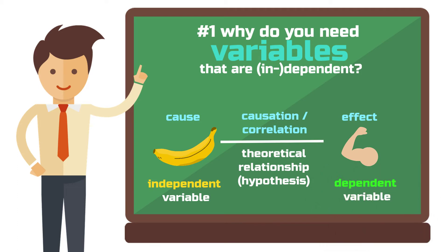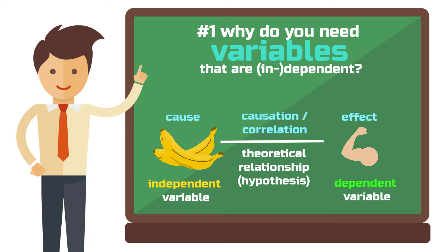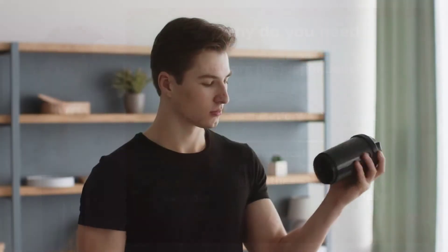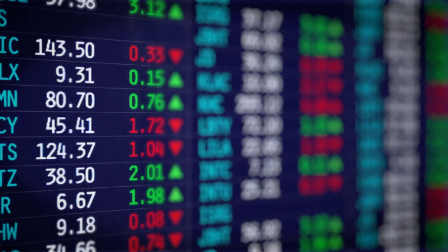Why is the first one called independent? Because this variable can be varied arbitrarily — it could also be drinking a protein shake or eating two bananas. In that sense, this variable does not depend on other variables, hence: independent variable. The second one, which represents the effect, is called dependent because the value of this variable depends on the cause. In reality, however, independent and dependent variables are often not as clear-cut as they may seem. In many real-world situations, multiple variables can be both independent and dependent at the same time, depending on the specific research question and the level of analysis.